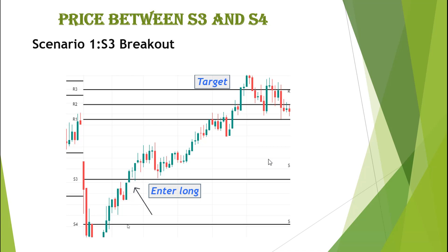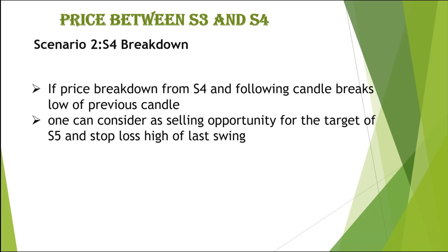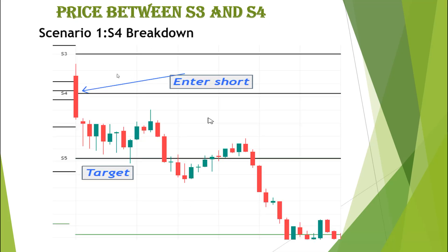Scenario 2: S4 breakdown. If the price is between S3 and S4 and breaks down from S4, and the following candle breaks the low of the previous candle, one can consider it a selling opportunity. The target is S5. Stop loss will be the high of the last swing. In this example, we got a red candle closing below S4, so we enter the short trade for the target of S5 — and that target was achieved.